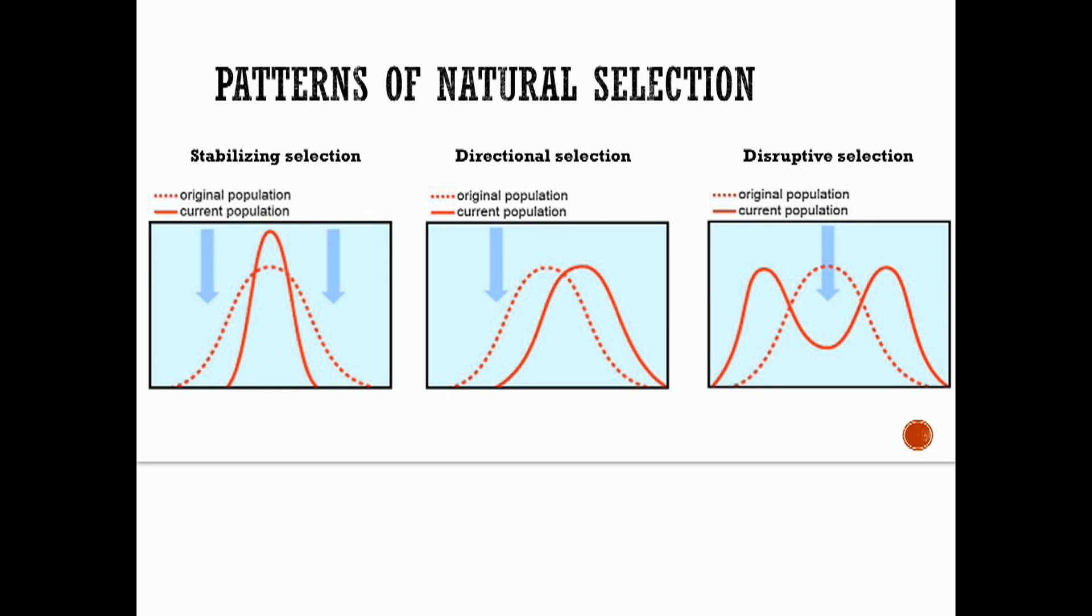Disruptive selection, also known as diversifying selection. This type of selection actually favors two or more extreme, so the sides, both sides, phenotypes over the intermediate ones. Over time, the previously intermediate phenotype becomes extremely rare and may even disappear. Because it tends to split populations into separate groupings, disruptive selection may lead to reproductive isolation and eventual speciation even when the populations are not geographically separated.